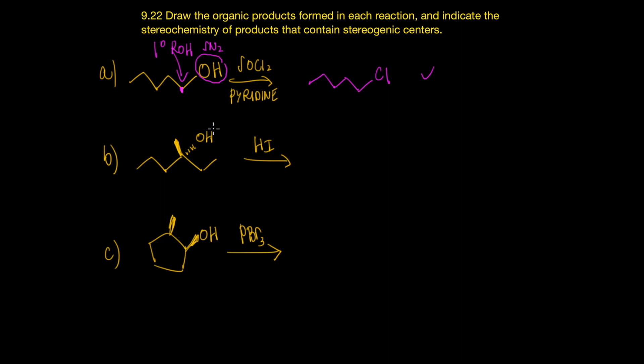In this second problem, we've identified the alcohol. Here's our hydroxyl group. It's bonded to this carbon. This carbon has three carbons attached to it. So this here is a tertiary alcohol. Furthermore, this carbon that I've highlighted is a stereogenic center.